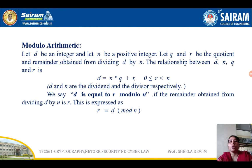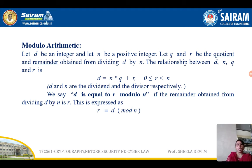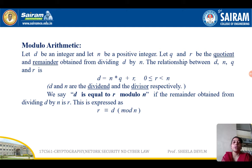This is modulo arithmetic. Let d be an integer and let n be a positive integer. Let q and r be the quotient and the remainder obtained from dividing d by n. The relationship between d, q, and r can be expressed as: d = n * q + r, where r satisfies 0 ≤ r < n.